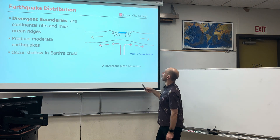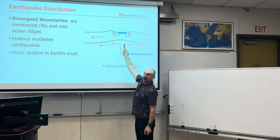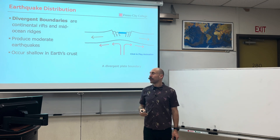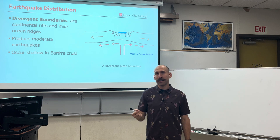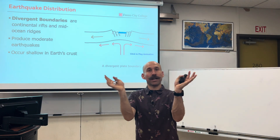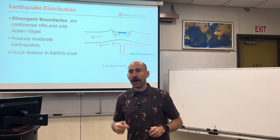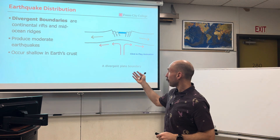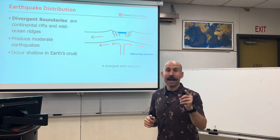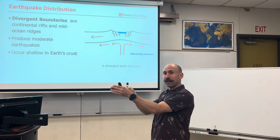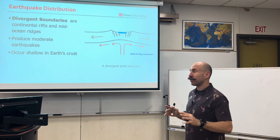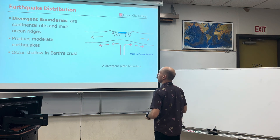Divergent boundaries, whether it's a continental rift or a mid-ocean ridge, are going to have moderate earthquakes that are shallow in Earth's crust. As new crust is being created and the movement of oceanic crust is occurring, shallow earthquakes are happening because an earthquake happens when there is displacement along a fault, releasing the stored energy in brittle deformation.